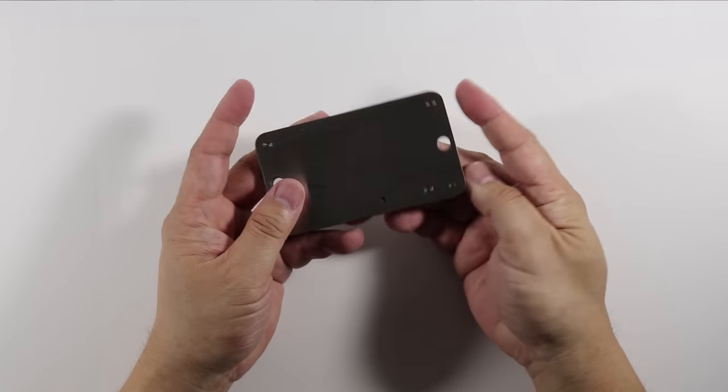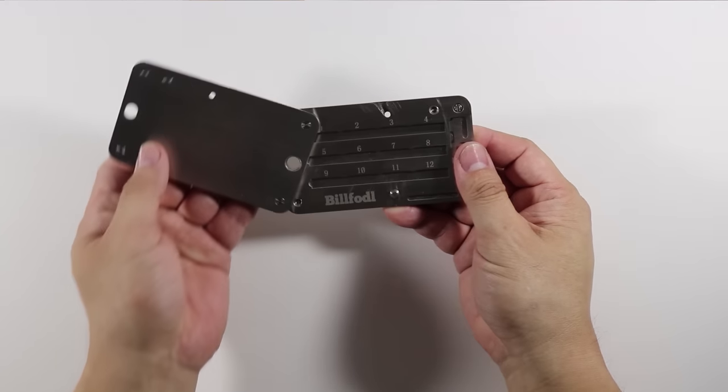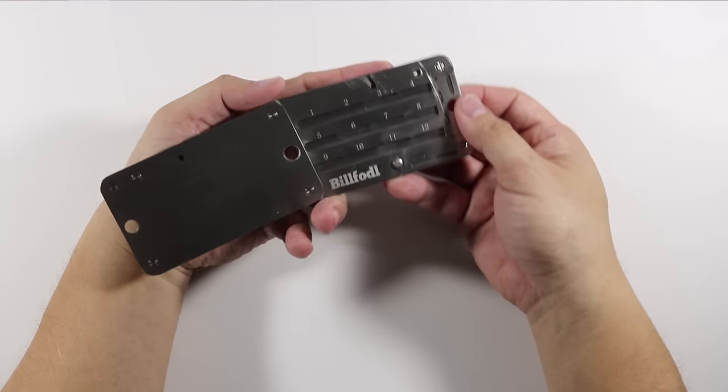Step 2. Slide the Billfoddle open and lay it on its side where you can see the laser engraved logo and the slots for the numbers 1 through 12.